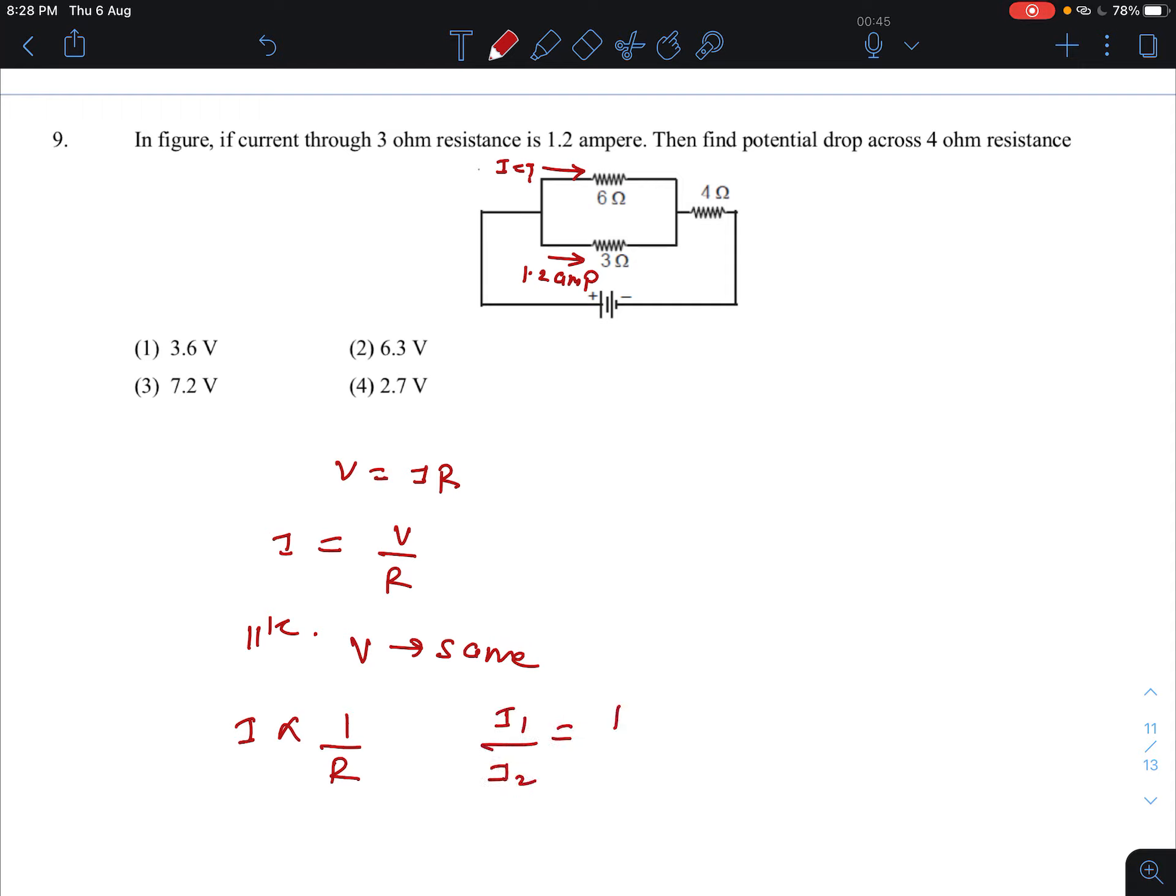So you can say I1 by I2 equals R2 by R1. I1 is 1.2 ampere. I2 we need to calculate. R2 is 6, R1 is 3. So I2 will be equal to 0.6 ampere.